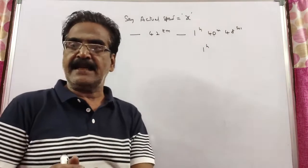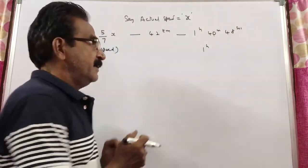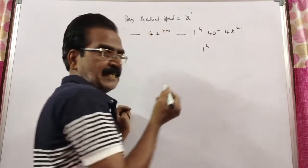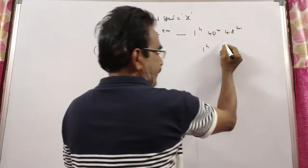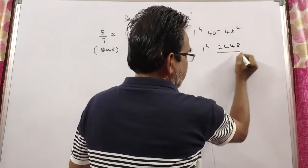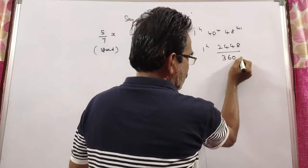then what is the actual speed of the car? 43 minutes and 48 seconds - let's convert this. 2400 plus 48 equals 2448 seconds divided by 3600. I am converting into hours.